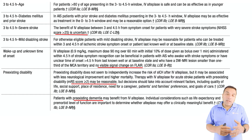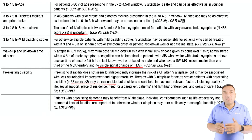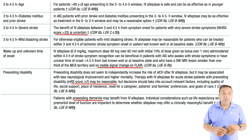For wake-up strokes, clearly with MRI DWI and FLAIR mismatch, you should consider giving TPA. The class of recommendation is 2a.